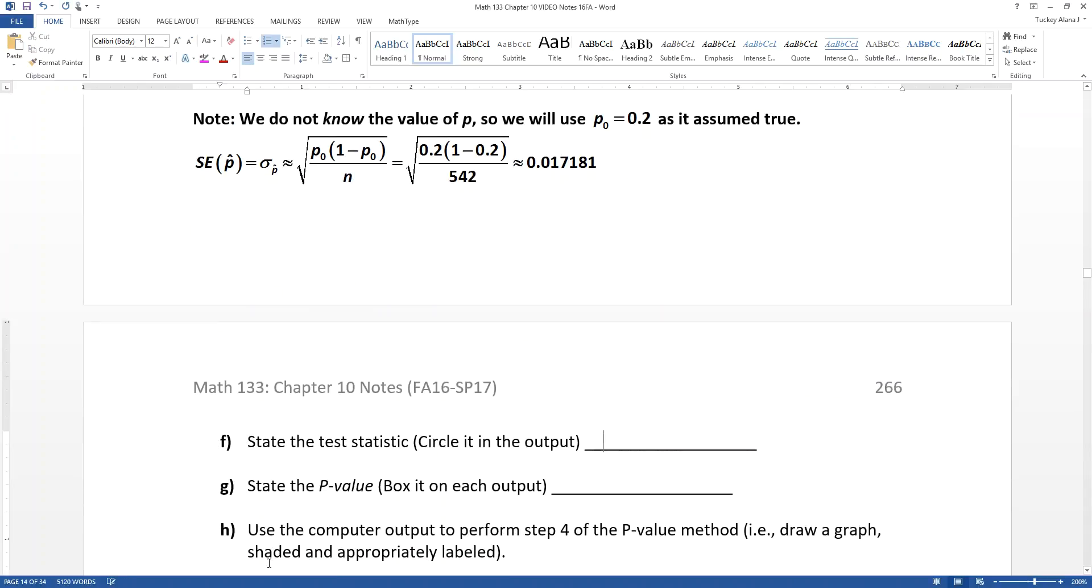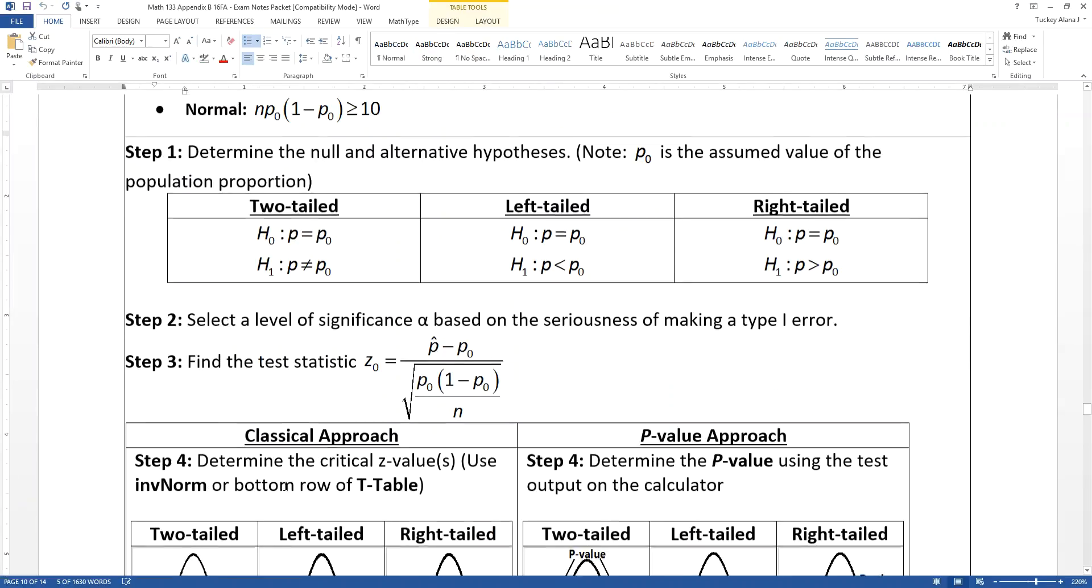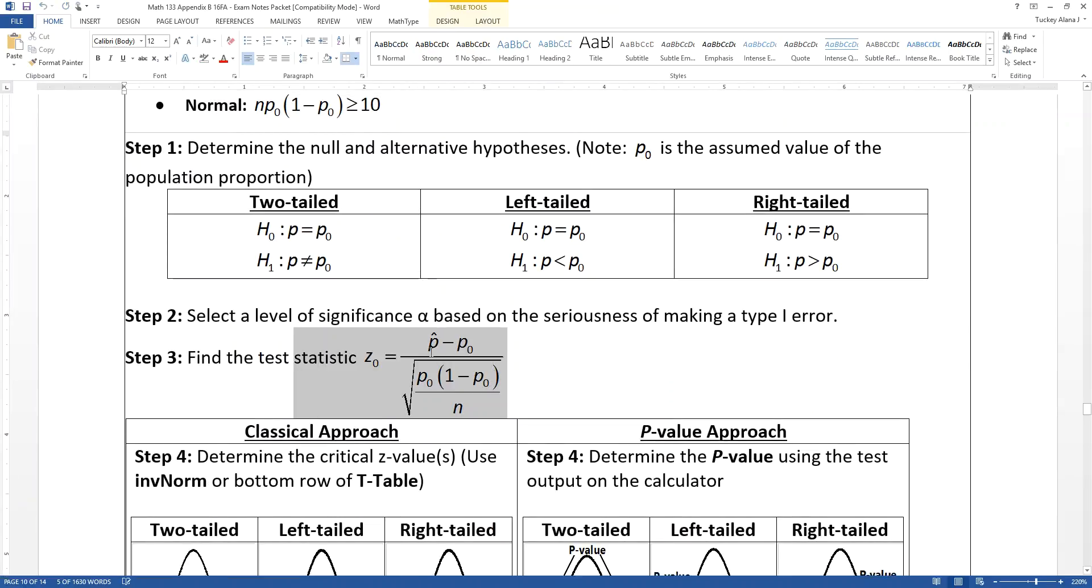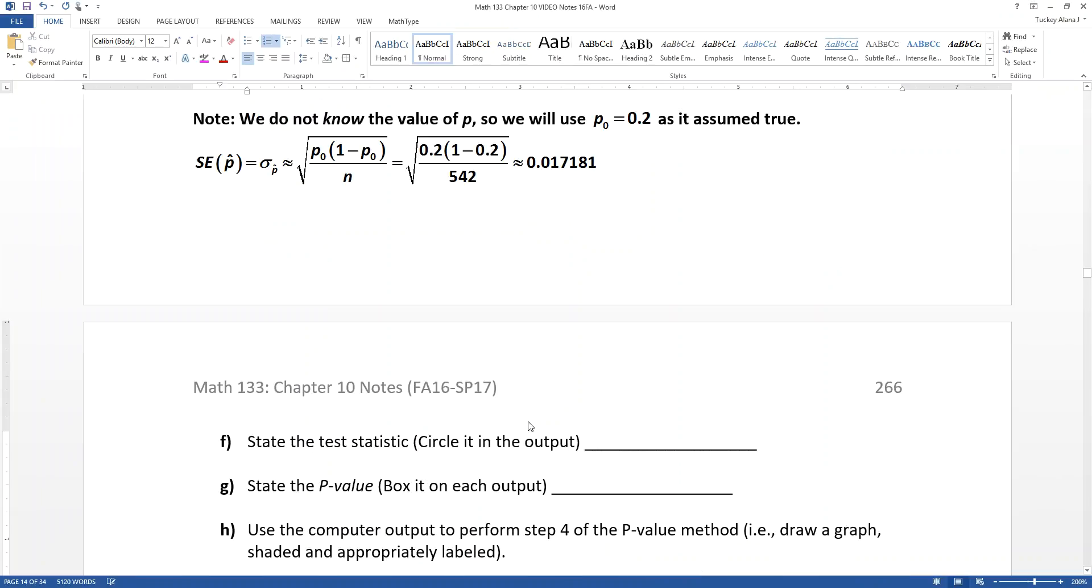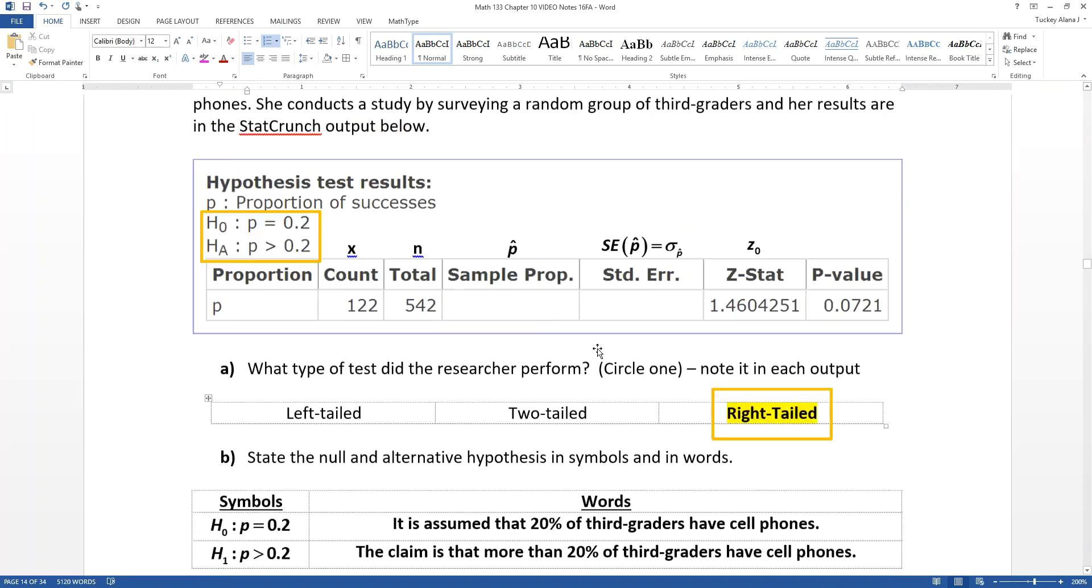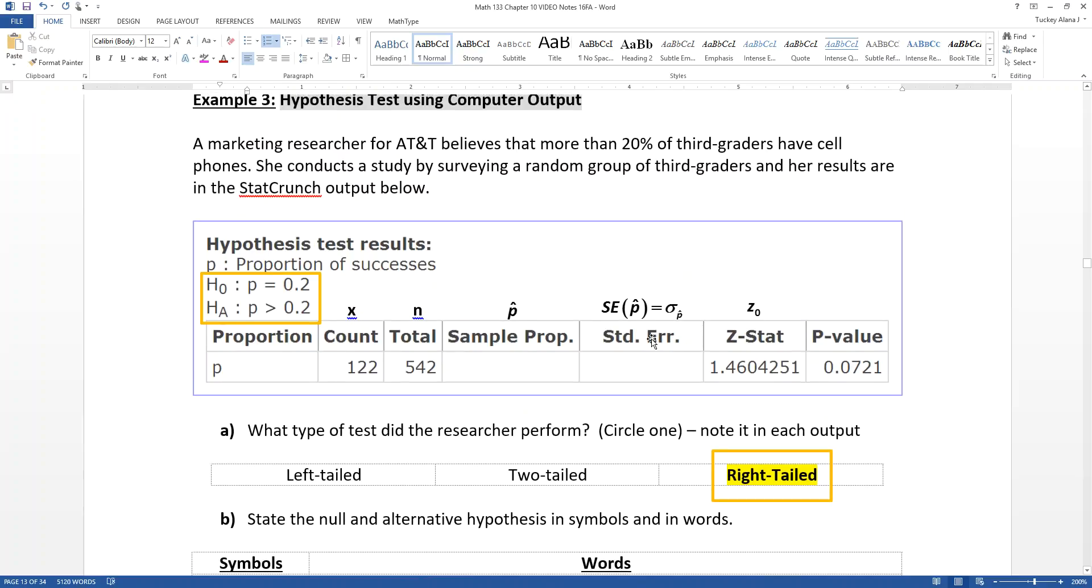Now the test statistic, let me remind you where that comes from in the process. The test statistic is Z0, which is your step three. So technically it's P hat minus P0 over the square root of blah, blah, blah. So we don't need all of that because it's given to us in the problem. They tell us that Z0 is 1.4604. So it's all calculated for us. So we're going to use that fact.